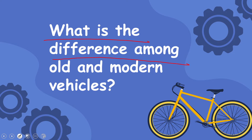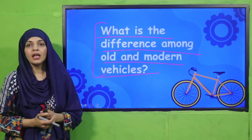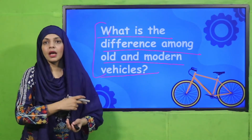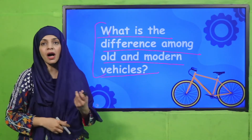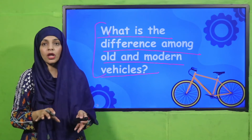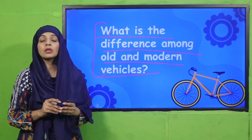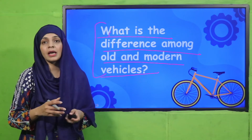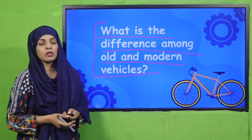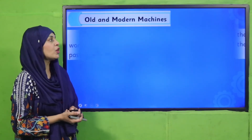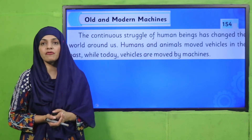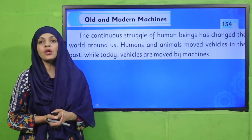Let's quickly move forward to the pre-reading question: what is the difference between old and modern vehicles? They were slow, they were not very fast. Today's modern machines are fast, comfortable, and also more environmentally relevant. You have to open page number 154 in your GK book.